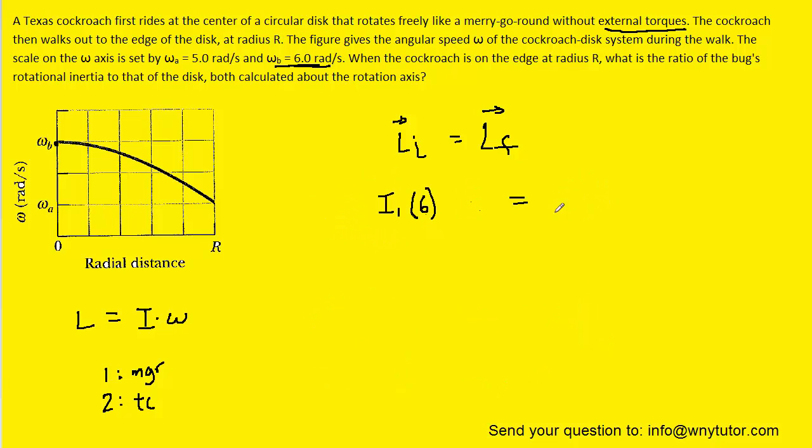We will now head over to the right-hand side of the equation. We are going to have the rotational inertia of the merry-go-round multiplied by its final angular velocity. We can go ahead and look at the graph. The final angular velocity is omega a, which the question notes is 5 radians per second. So we can plug 5 in there. And then we'll add that to the final angular momentum of the Texas cockroach. We don't know its angular momentum, so we'll just call it I2. And then we'll multiply it by the final angular velocity, which again is 5.